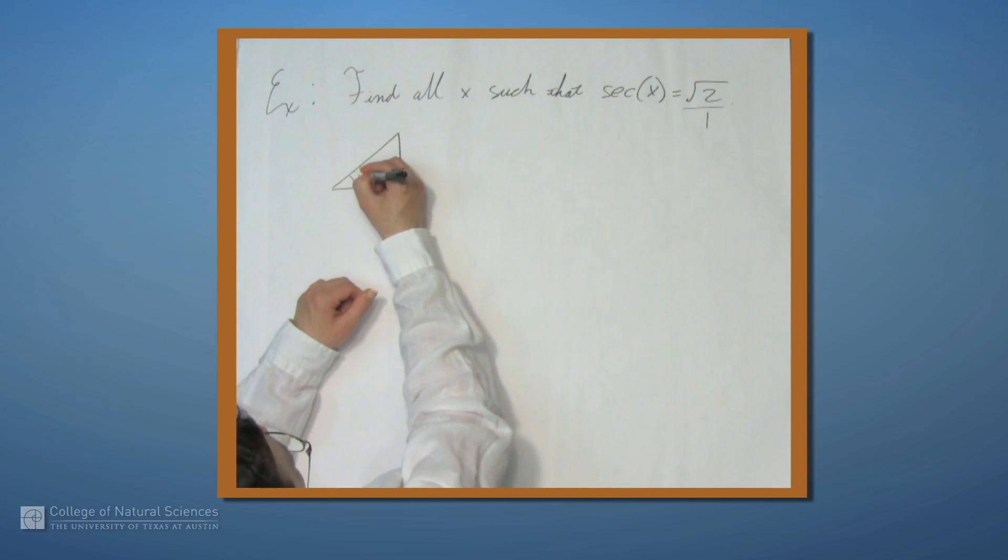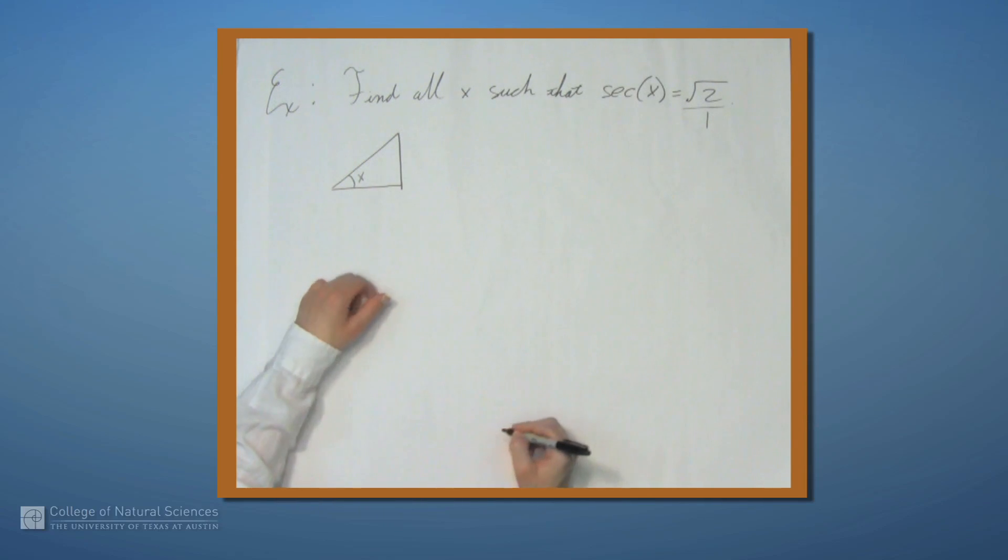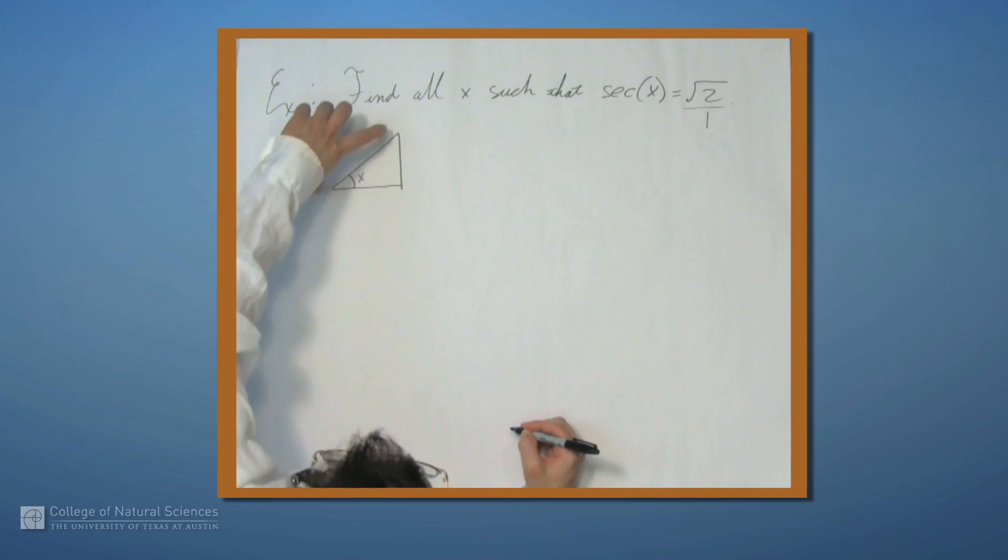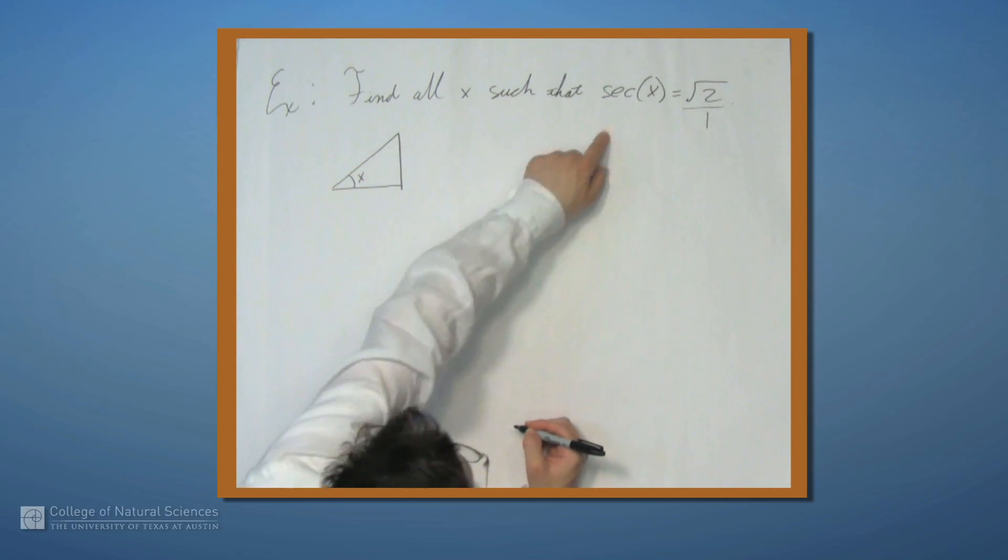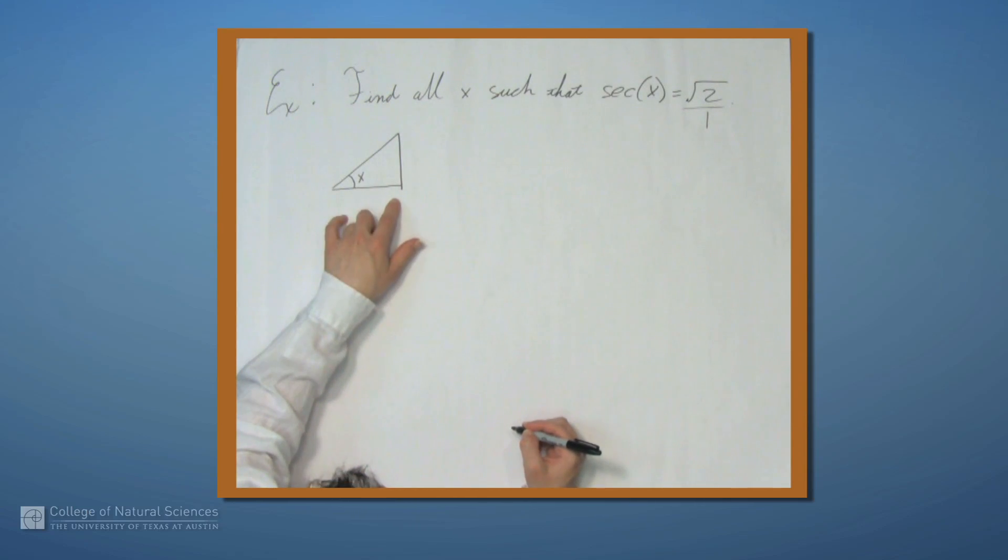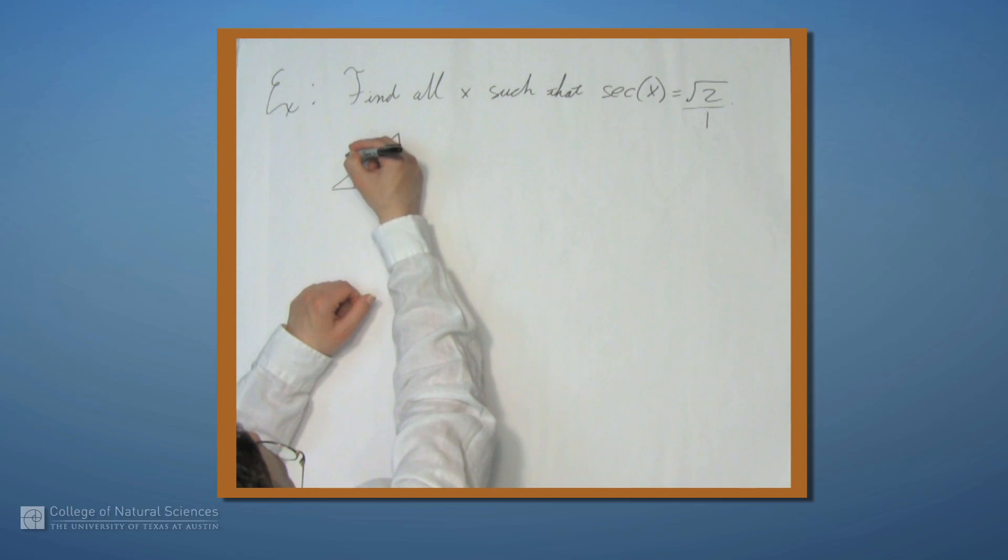Let's label this angle x. Cosine is adjacent over hypotenuse. So secant is hypotenuse over adjacent. So that means we'll label the hypotenuse, the square root of 2, and adjacent with 1. And you can use the Pythagorean formula to find out that this remaining side has to be 1 also.